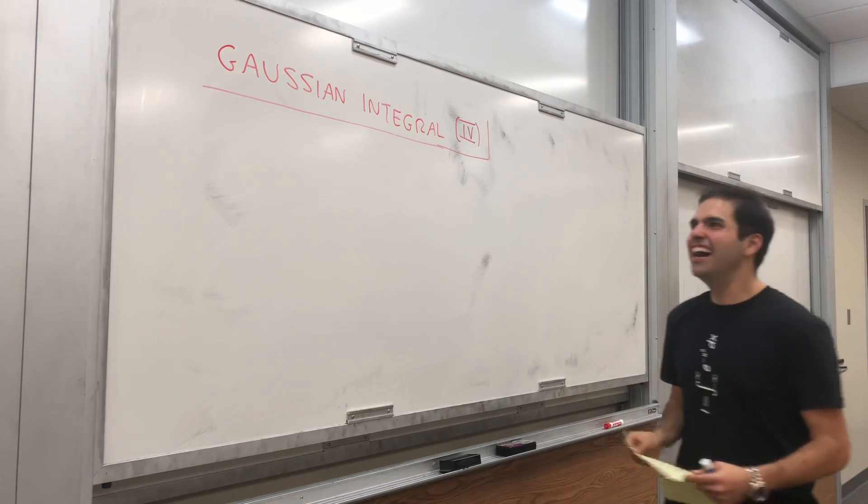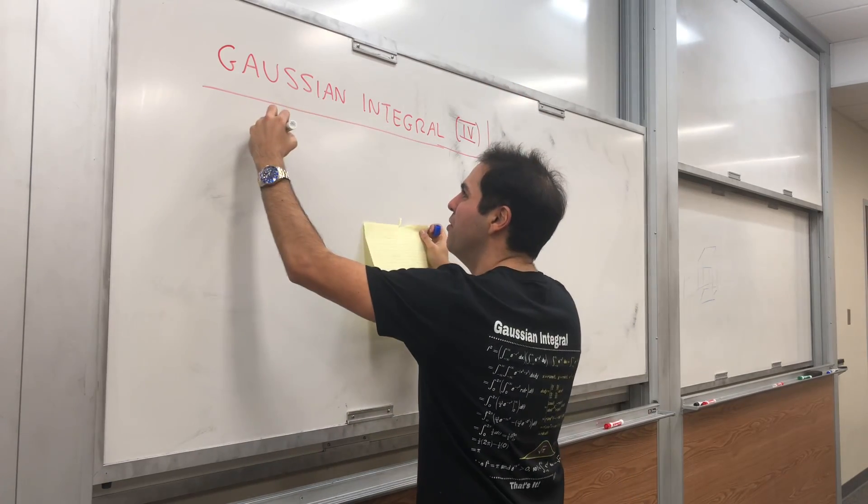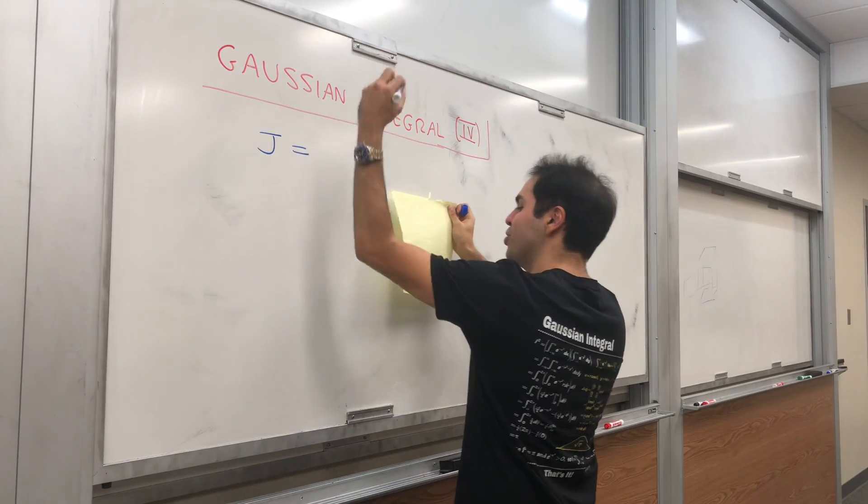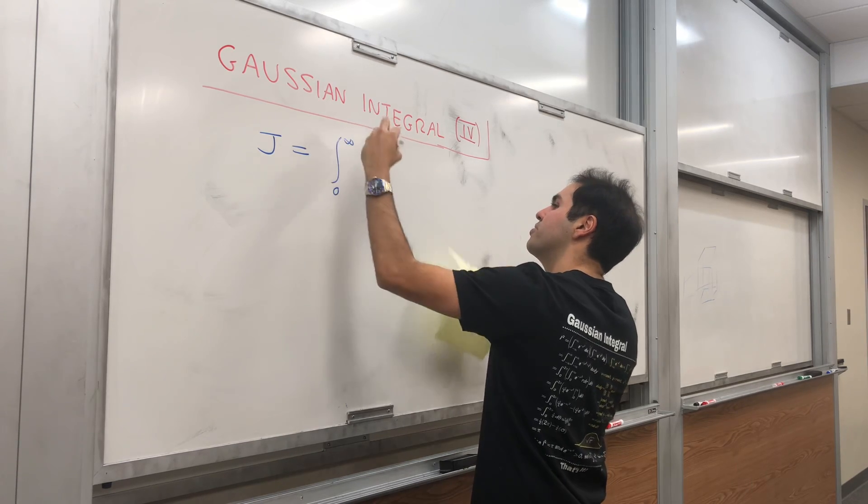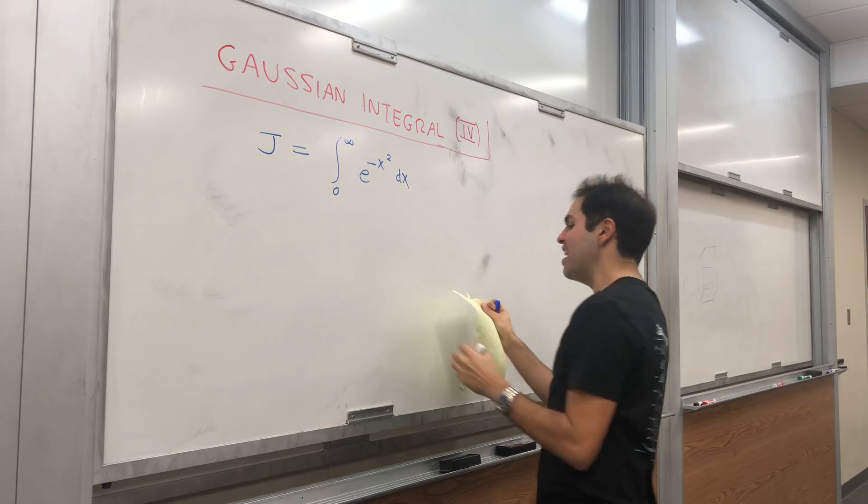Anyway, enough fun, even though this is pretty fun. So, as usual, let J be the Gaussian integral, integral from zero to infinity of e of negative x squared dx.